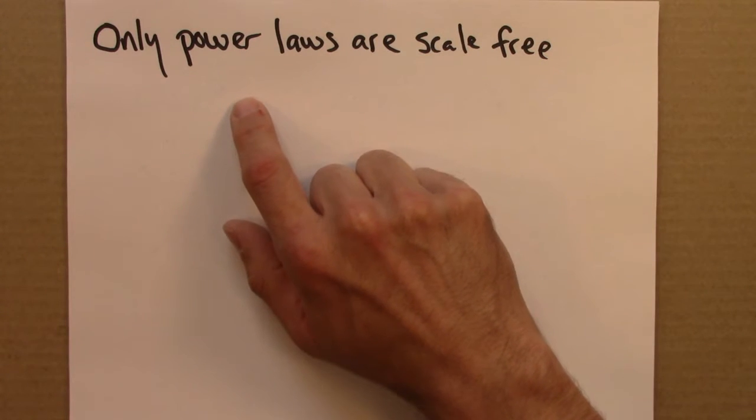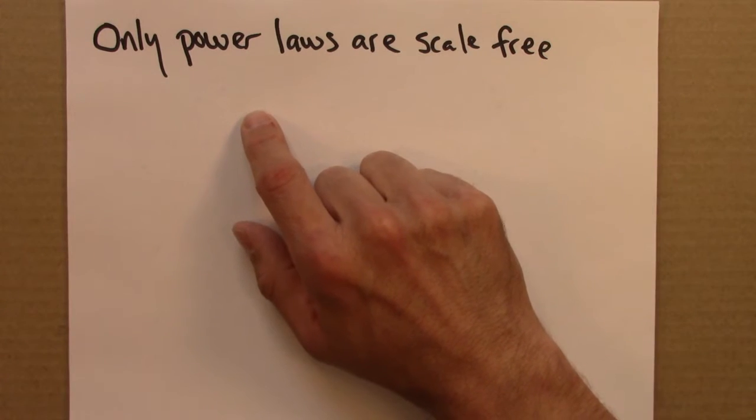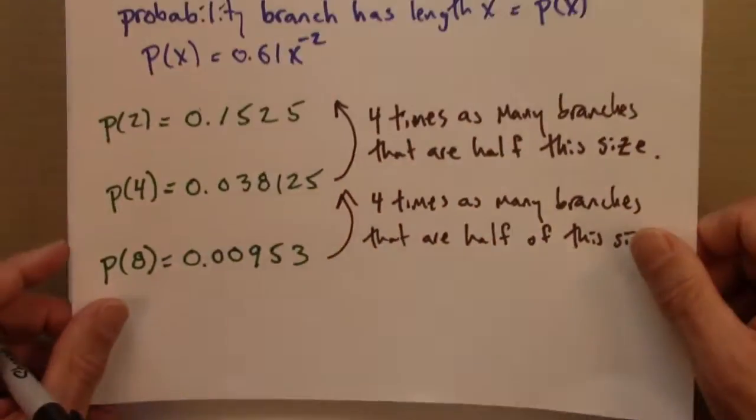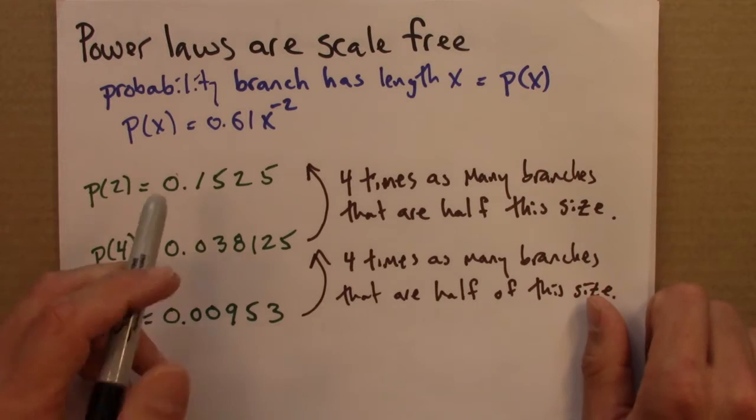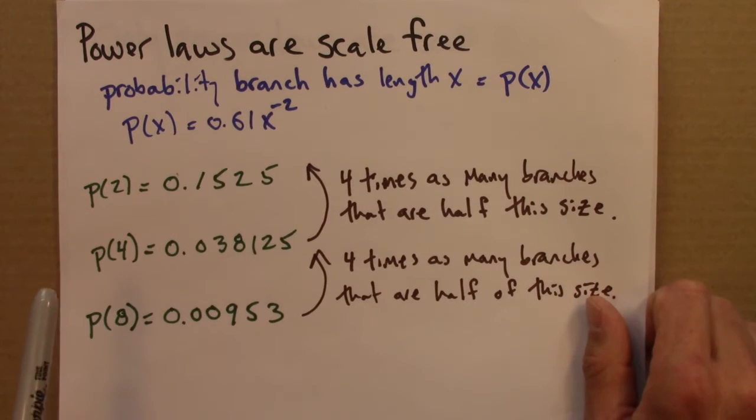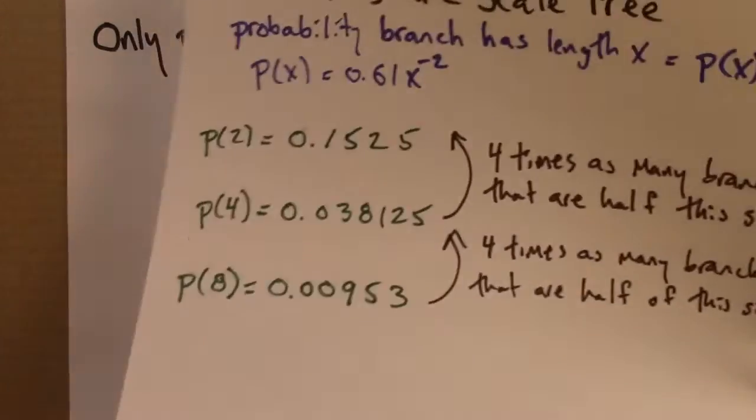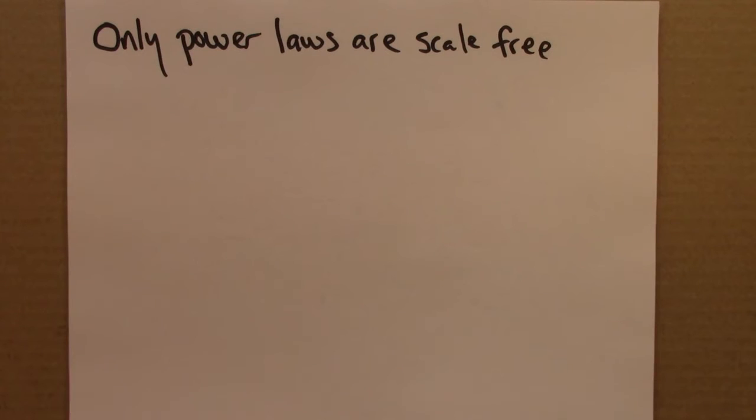So in order to establish this, let's start by thinking about what it means to be scale free in the first place. So recall back to this example, we saw that P2 divided by P4 is the same thing as P4 divided by P8. That this ratio is constant. So let me write that down in a slightly more general form.